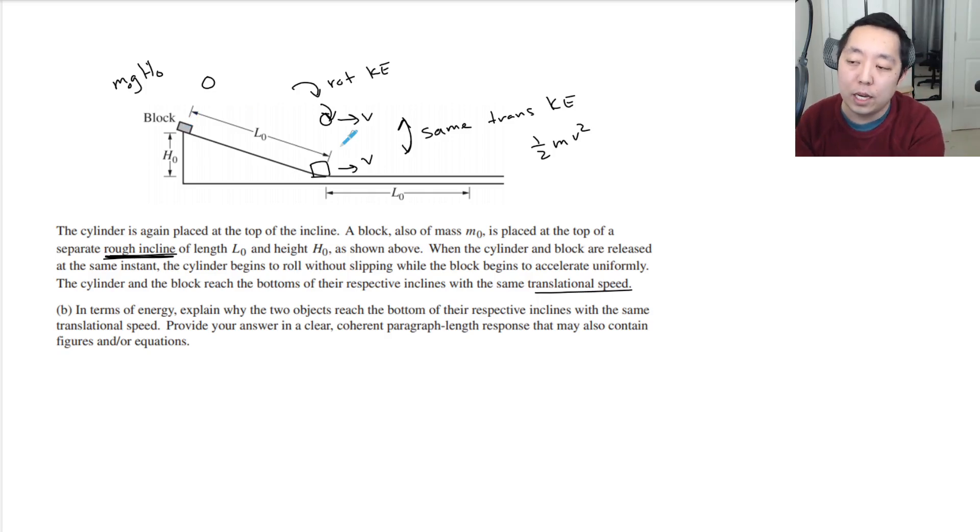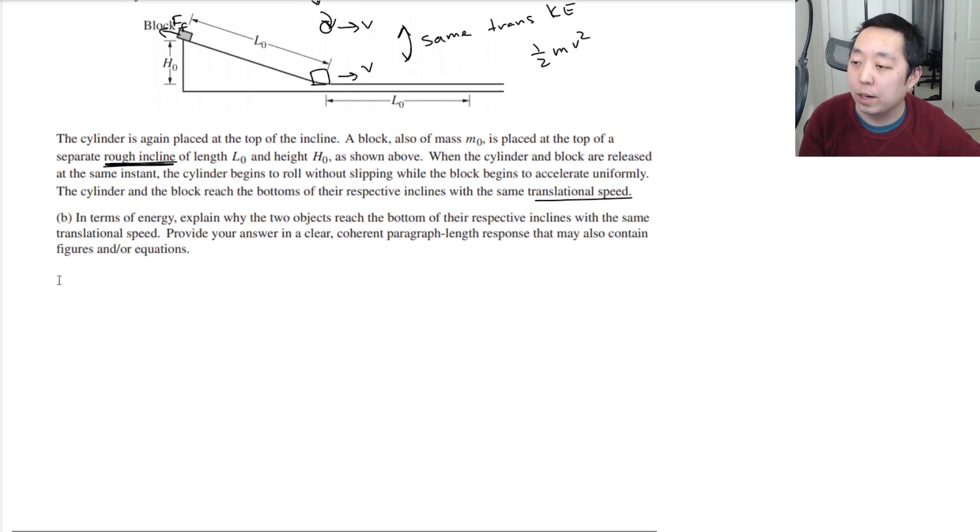Now, for the one that's rolling without slipping, he didn't lose any energy. He conserved his energy the entire time. Whereas, the block had worked on it by the outside by friction. So the friction slowed down the block enough. Or in other words, in terms of energy, did work on the block to reduce its energy. So, in terms of how I would write this, I'm not going to handwrite this because this is a paragraph one. So I'm going to just type it. It's a little bit faster.